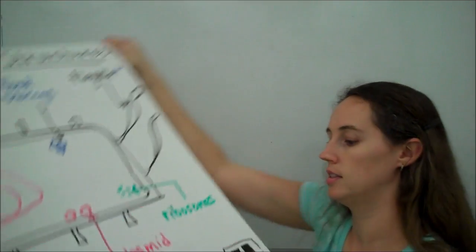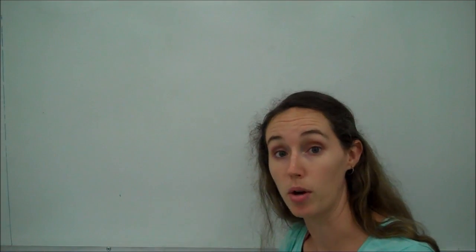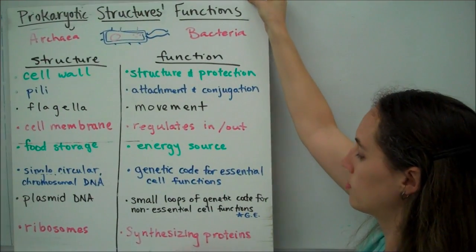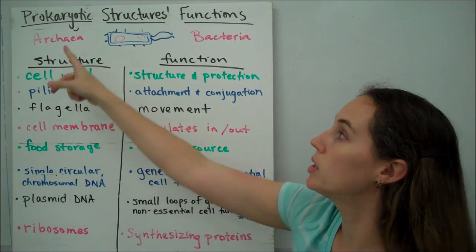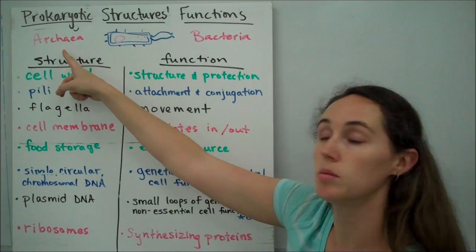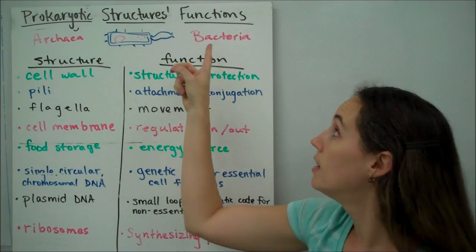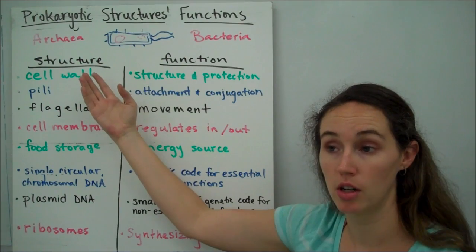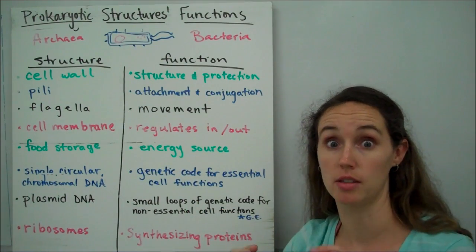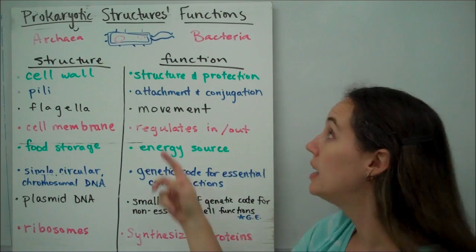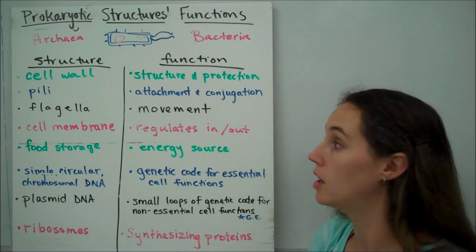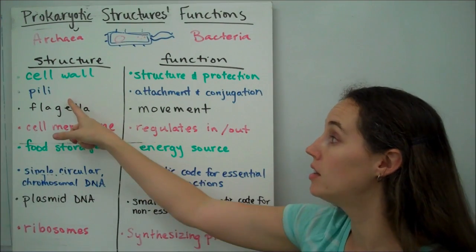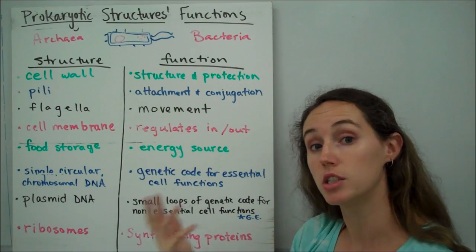Now, let's look at what each of these cell parts does. Again, remembering that our prokaryotic organisms are found in their domains archaea and bacteria. So, the cell wall is a structure whose job is to actually keep the structure of the organism, as well as protect it from outside forces. Sticking out, remember, from the outside of the cell wall are pili.